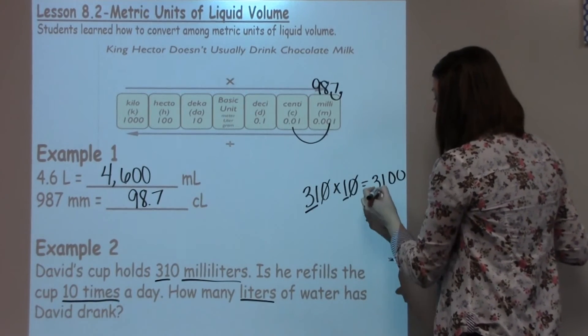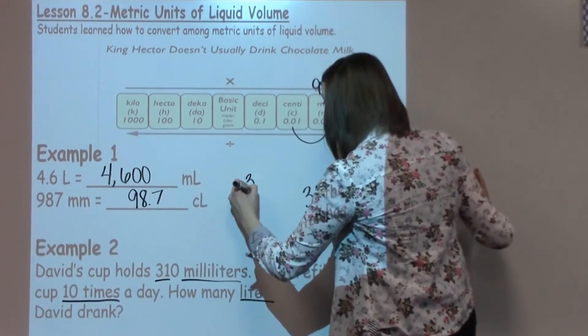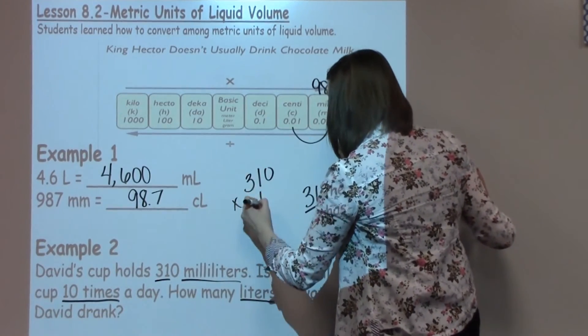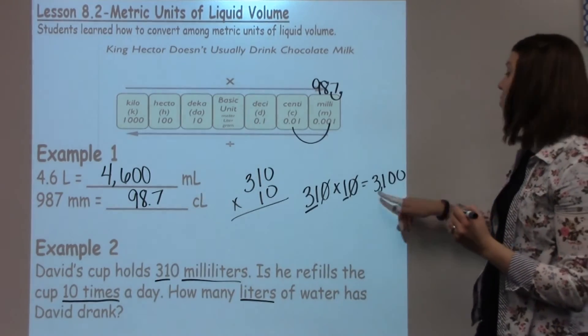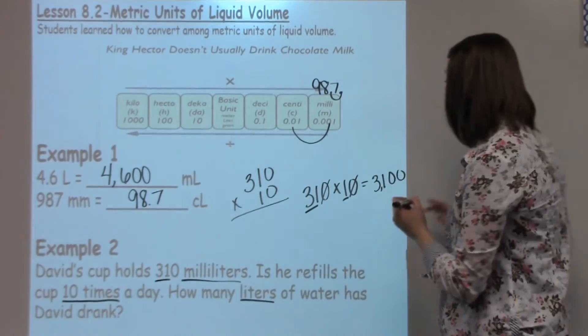If your student doesn't know that trick, they can just go ahead and write this down traditionally and solve it and find the same answer of 3,100. Again, this is in milliliters.